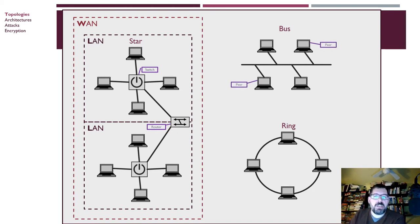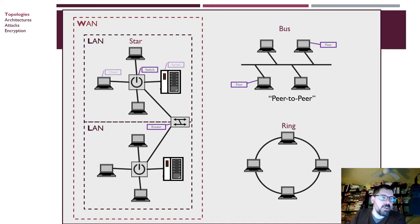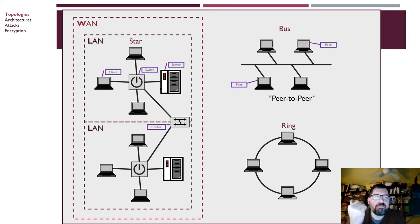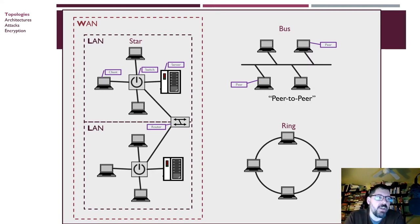We call networks where all computers are equals peer-to-peer networks. In this course, we're mostly talking about client-server networks where some computers are servers and some are clients. We'll talk about that in more detail in the coming weeks, when we discuss services offered on the network and how to secure them on a Linux machine. By and large, the largest use of Linux is as a server, though one could also argue Android devices.